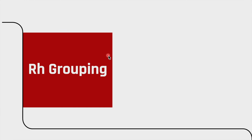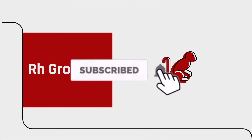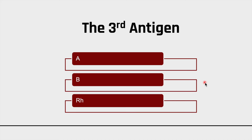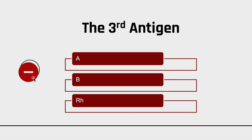Now let's move on to Rh grouping. Rh stands for Rhesus, because this antigen was first found in rhesus monkeys, so we named it after them. This is the third antigen type. If you have this antigen, you are given the name positive; if you do not have it, you are given the name negative. So it works like A positive, B negative, AB positive, and so on.